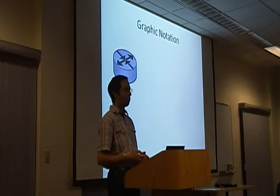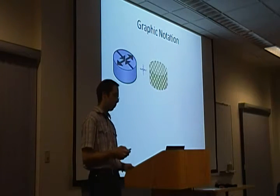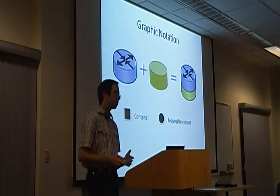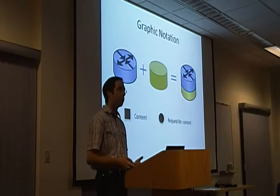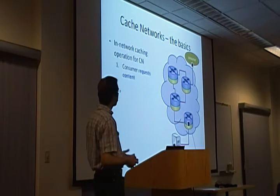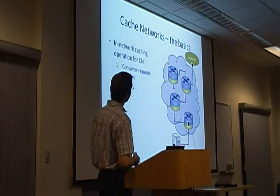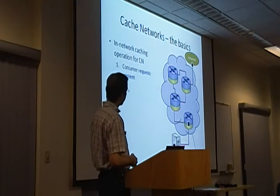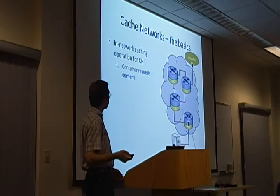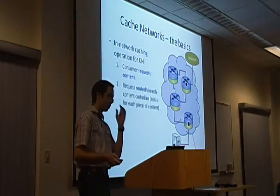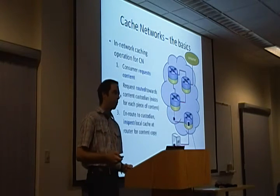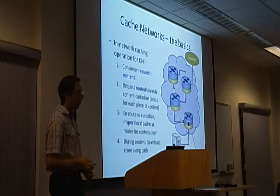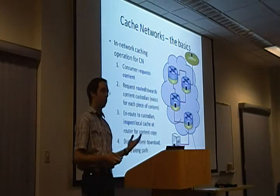A quick note on graphic notation: we have the classic router, and we add caching storage to it — these are cache routers. Throughout the talk, squares denote content items and circles of the same color denote a request for that content. In the basic cache network operation, a consumer requests a piece of content present at the content custodian. The request is routed toward the custodian, checking cached routers along the way. Once located — whether at a custodian or a router — the content is downloaded to the consumer, and cache routers along the download path store the content that passed through them.